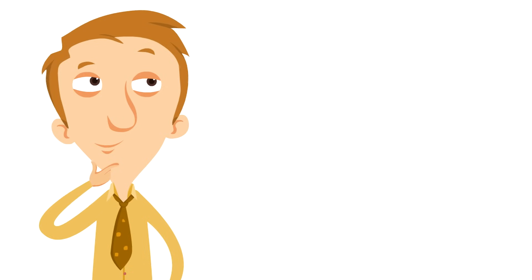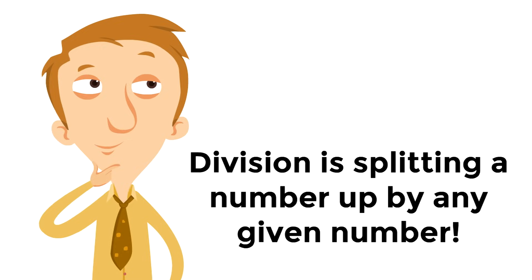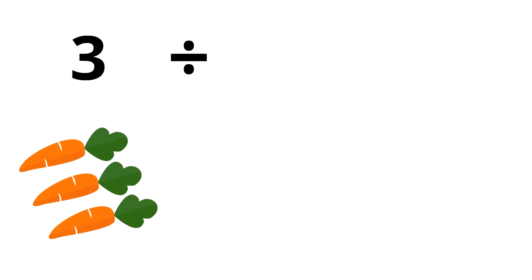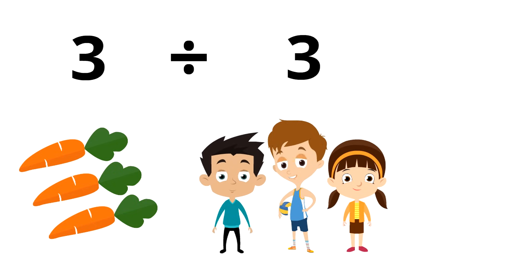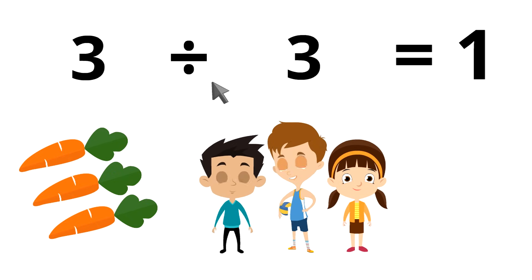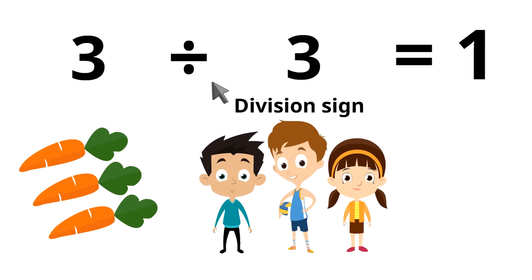Division is pretty simple. Division is splitting a number up by any given number — that's it, just splitting a number up. There were three carrots and we divided those three carrots by three because there are three people. The answer of how many carrots each kid gets is one: three divided by three equals one. Notice right here is the division sign — this is what it looks like. When you see that sign, you can just say 'divided by,' so this reads: three divided by three equals one.